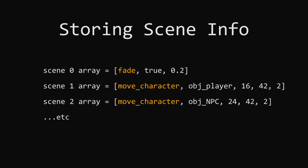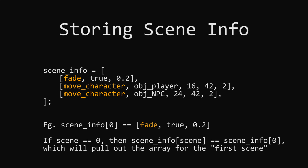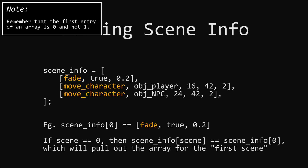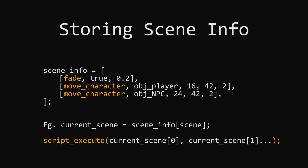Let's come back to how we're storing the information. We can create an array for all of our scenes — for each of them, the script will always go into the first position and then the arguments fill the rest of the array. When we have all of those arrays, we could put all of them into one giant array, kind of having arrays within arrays, almost forming a grid. We could call this whole array scene_info, and use our scene variable to access each individual scene. If scene equals zero, we pull out the first array containing all the information for the first scene; if it's equal to one, we get the second one. Then we just use script_execute to have our scripts running properly.